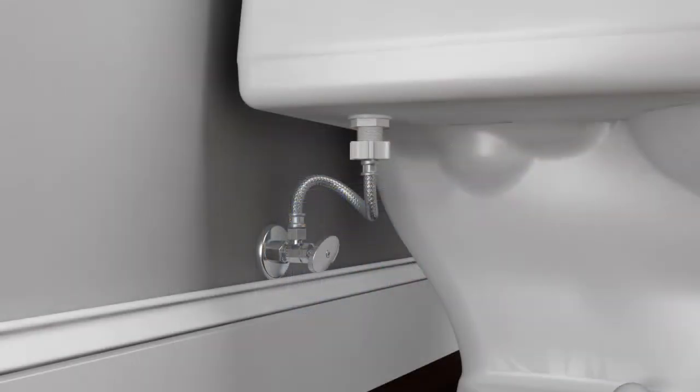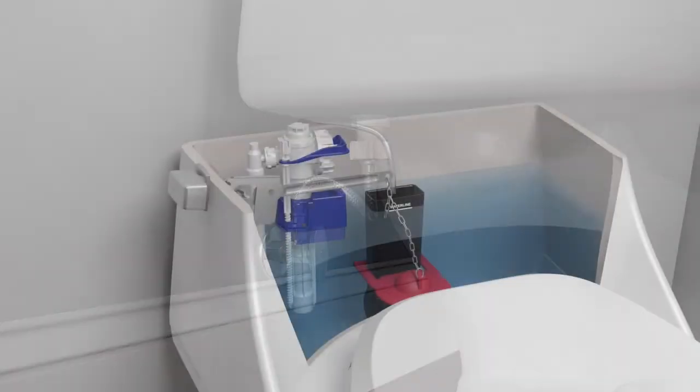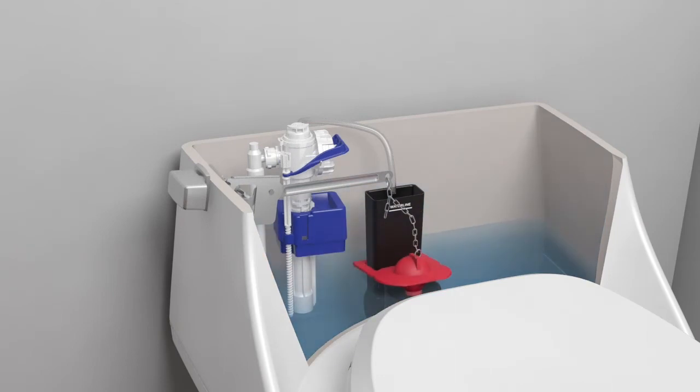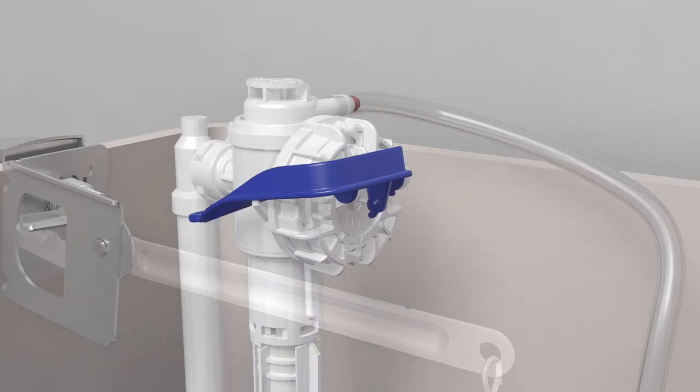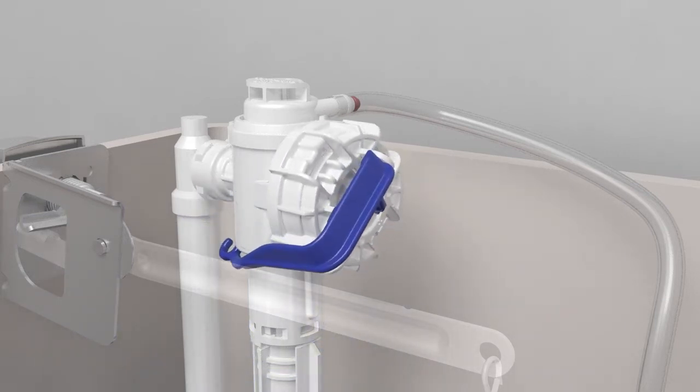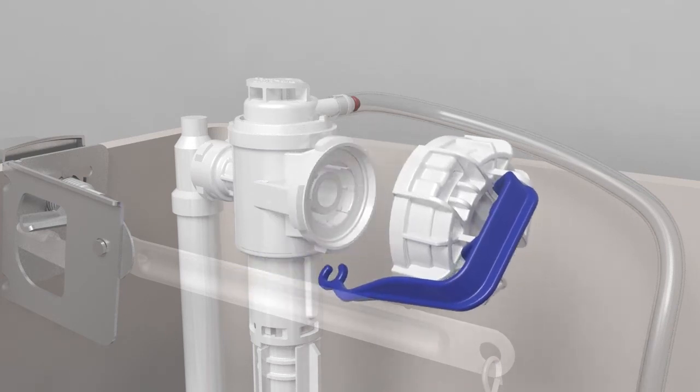Turn off the water supply. Lift the flapper chain to drain the water from the tank. Disconnect the arm connecting the cap to the fill valve adjustment screw. Rotate the cap an eighth turn counter-clockwise until it clicks, then remove the cap.